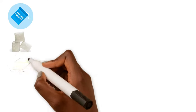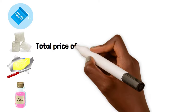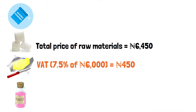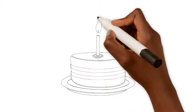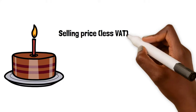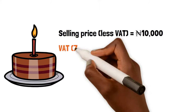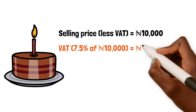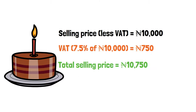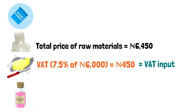Let's say a business owner buys VATable raw materials for 6,450 naira. That means a VAT of 450 naira was paid on goods that cost 6,000 naira. After converting the raw materials to a finished product, the business owner determines the selling price to be 10,000 naira, excluding VAT of 7.5% of the selling price, which is 750 naira.